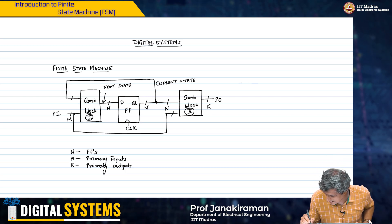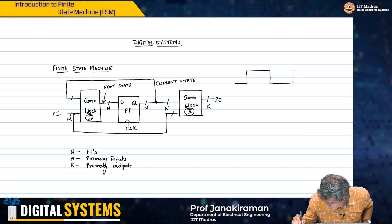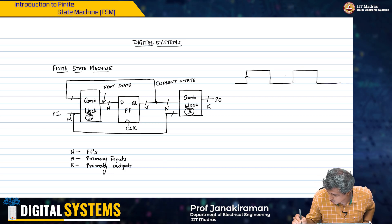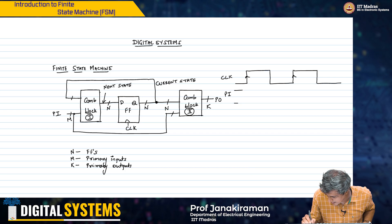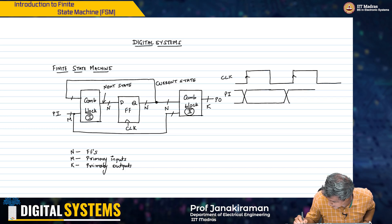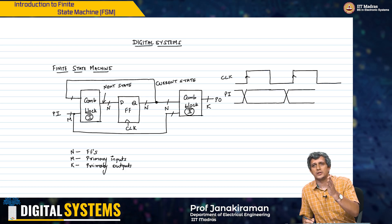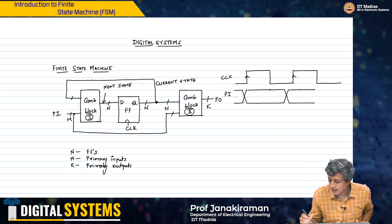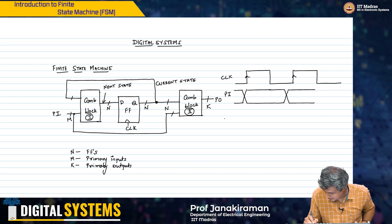If I look at this as a timing diagram — I have already introduced you to the concept of a state — the system responds to the positive edge of the clock. I can have my primary inputs switching at various times. It does not matter when the primary inputs switch, because the output of the flip-flop will only update after the positive edge of the clock. So the primary inputs will be going through some sort of changes, and I also have the current state.